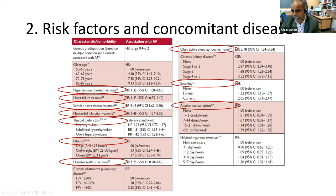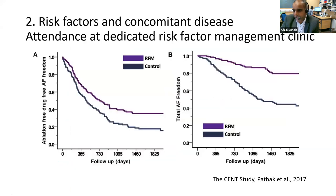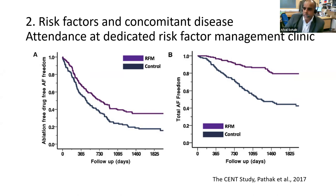If you pick up any of those risk factors, they need to be addressed individually. In Australia they're pioneering risk factor management in AF, and have found that getting really on top of weight loss, blood pressure control, CPAP for sleep apnea, and alcohol reduction can actually produce a dramatic fall in the amount of AF the patient gets. So this is very much part of the treatment strategy — more than just giving a drug. If you can get on top of lifestyle factors, you can improve AF symptoms.